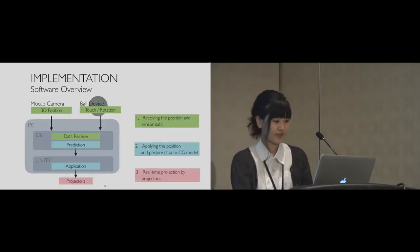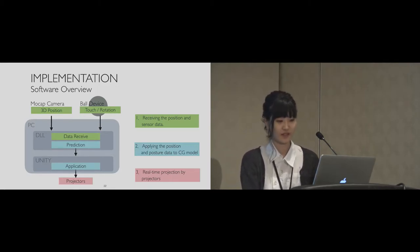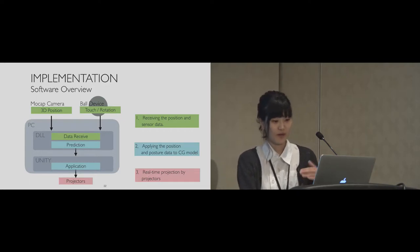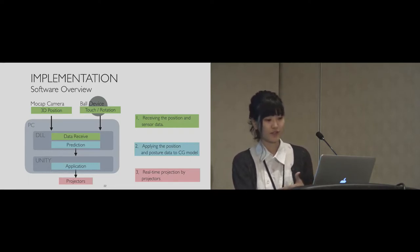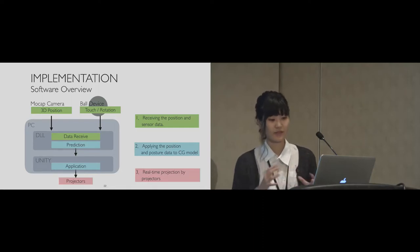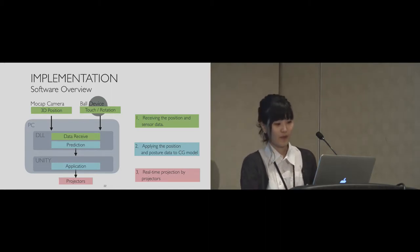The system configuration diagram is like this. First, data from cameras and sensors are sent to the PC for rendering. For this information, this system applies the delay reduction algorithm for real-time tracking and projection. Then these data are applied to the position and orientation of the corresponding textured ball model, and the system generates an image to be projected on the ball. Finally, those images are projected onto the device. This is the flow of the system.